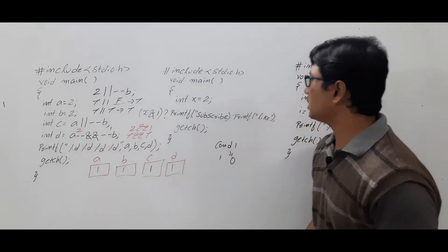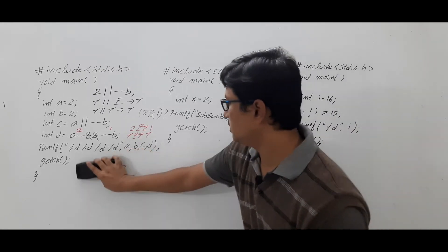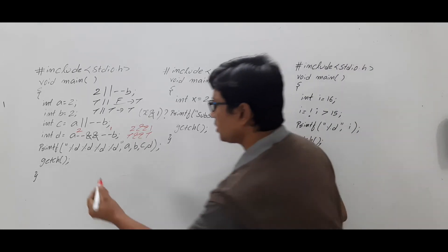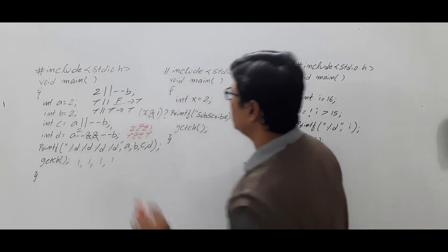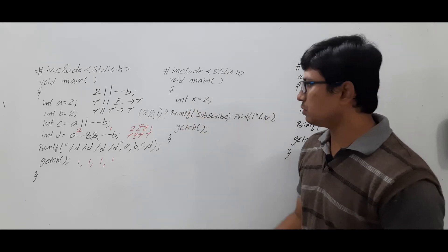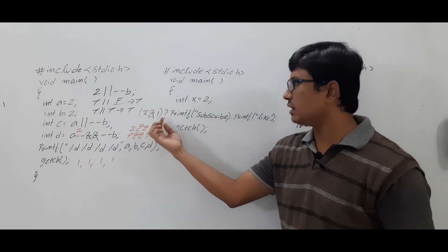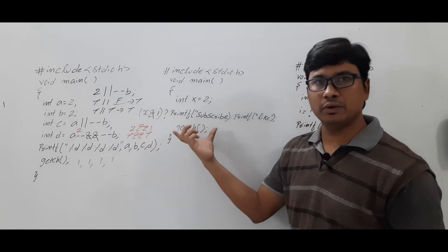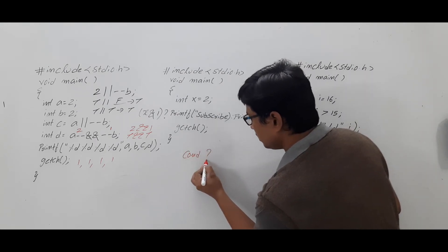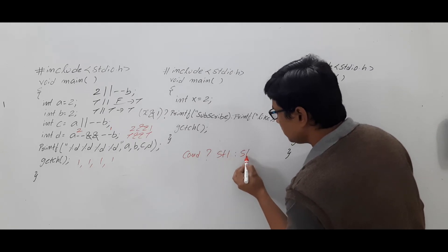Now we will come to the second program. So program one produces the output 1, 1, 1, 1. Now look at this program: int x = 2, x bitwise AND 1 — this is the conditional operator. The conditional operator has the form: condition ? statement1 : statement2. If the condition is true, statement1 is executed; if false, statement2 is executed.